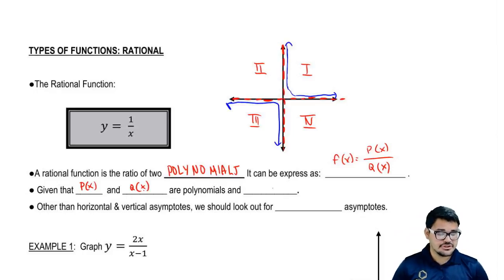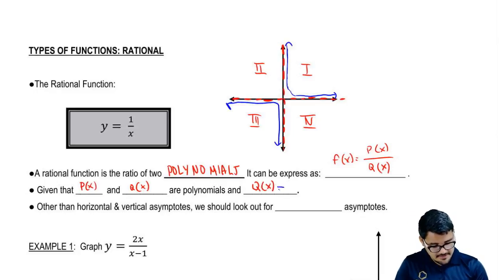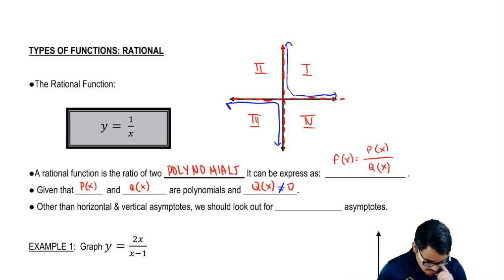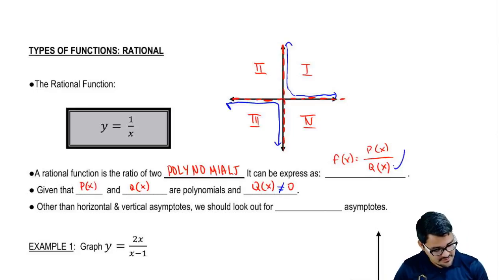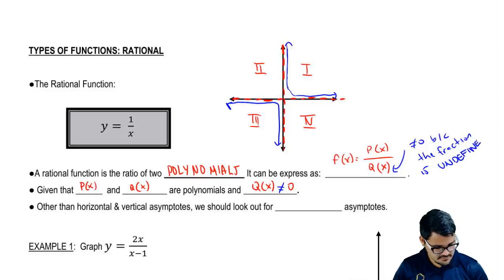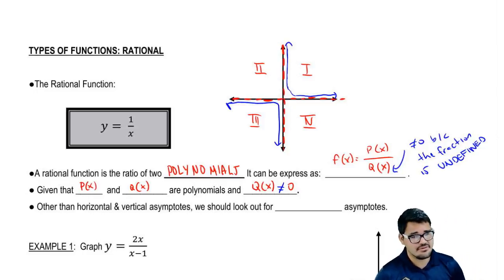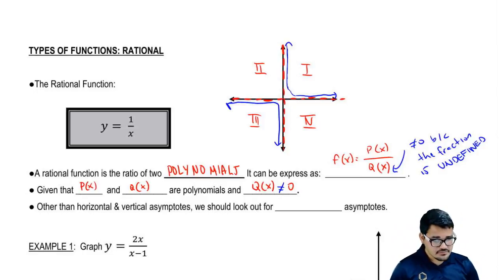There's a restriction on one of these. The restriction on this rational function is that the bottom of the fraction cannot be equal to 0. So the bottom polynomial, q of x, cannot be equal to 0. What happens if q of x is equal to 0? If q of x equals 0, the fraction is undefined. Whenever the bottom of the fraction is 0, it's undefined, so we try to make sure that q of x is not 0.